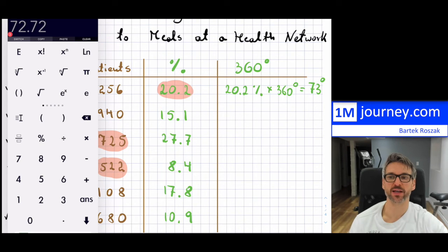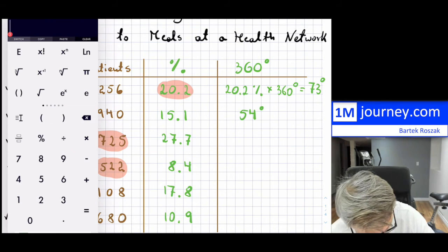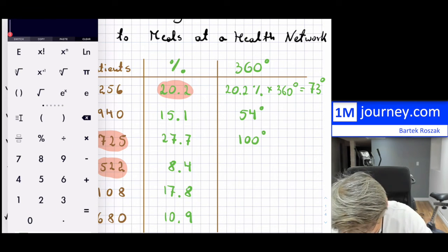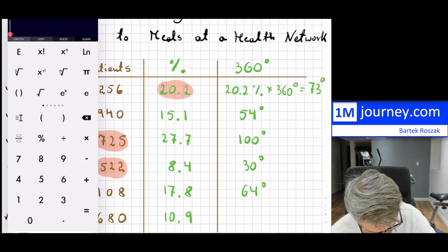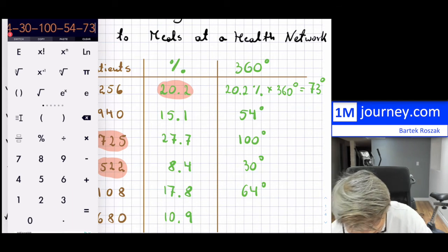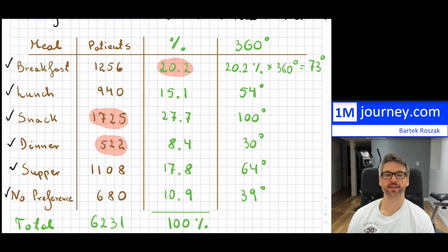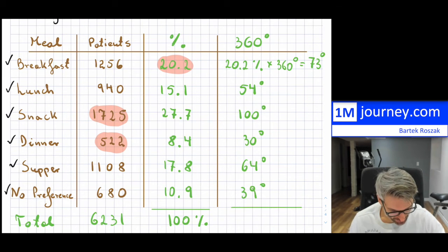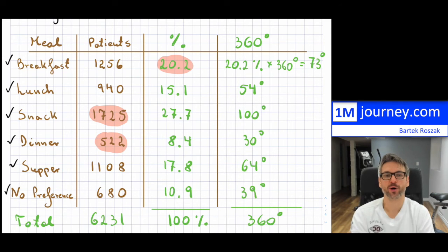Do exactly the same thing for all the other categories — I'll fast-forward and fill this up. That completes the angles for our pie chart. When you add all of these up, make sure the total is 360 degrees. Round accordingly to obtain that.